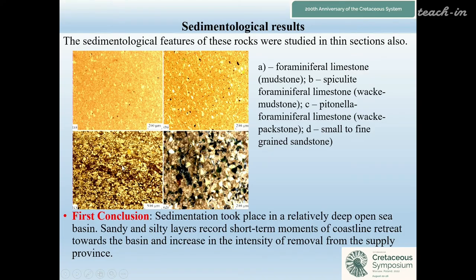The sedimentological features of these rocks were studied in thin sections. We identified: A — foraminiferal limestone mudstone; B — spiculite foraminiferal limestone mudstone; C — Pithonella foraminiferal limestone packstone; and D — small to fine-grained sandstone. First conclusion: sedimentation took place in a relatively deep open sea basin. Sandy and silty layers record short-term episodes of coastline retreat towards the basin and increased intensity of terrigenous input.